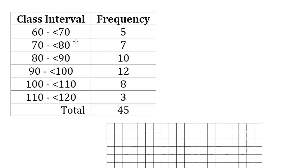So because we have our data in groups, we have 5 numbers between 60 and 70, 7 numbers between 70 and 80, 10 numbers between 80 and 90 and so on.